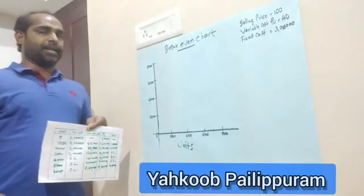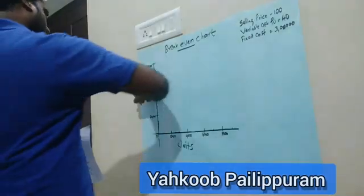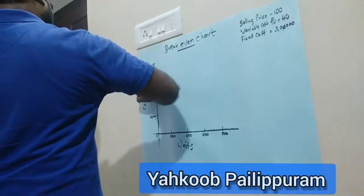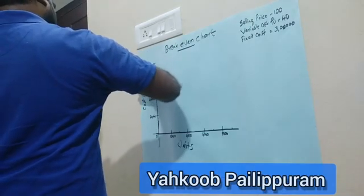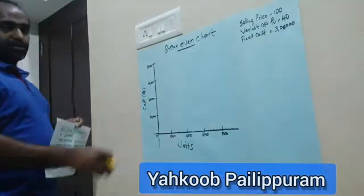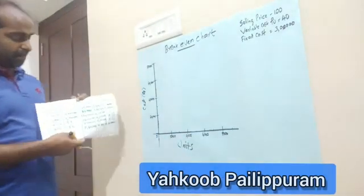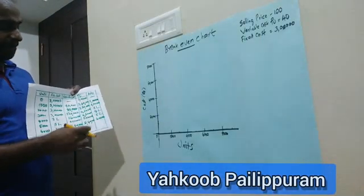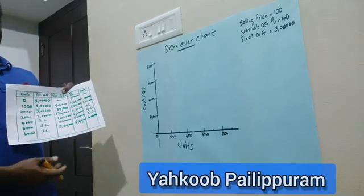The maximum value on the Y-axis will be around Rs. 24,00,000 to accommodate both costs and sales. The maximum cost is around Rs. 5,00,000 and sales goes up to Rs. 6,00,000. These figures come from the table calculations.